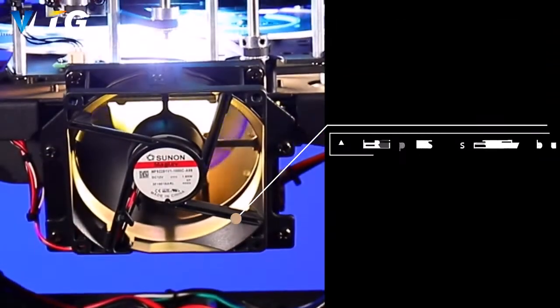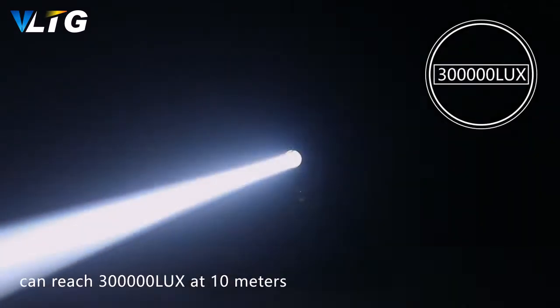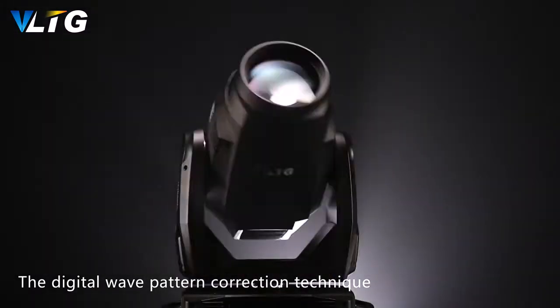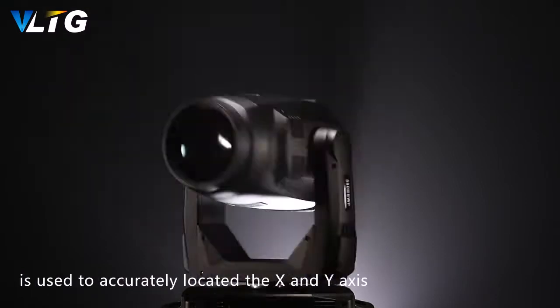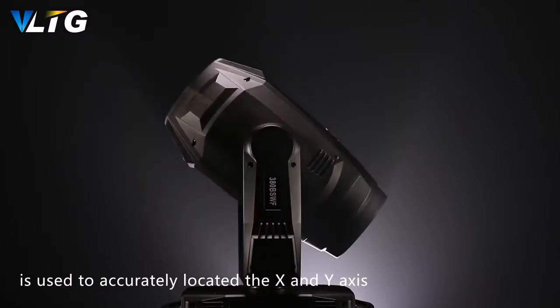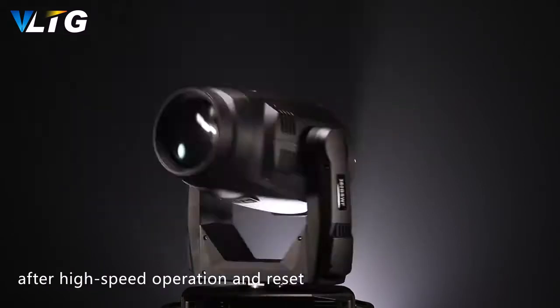Using Philips MST Silver 380W bulb, the light output reaches 300,000 lux at 10 meters. The digital wave pattern correction technique accurately locates the X and Y axis. Does not shift or pause after high-speed operation and reset.